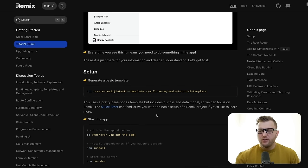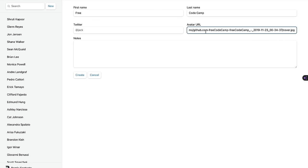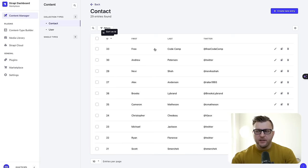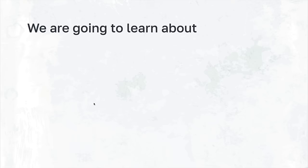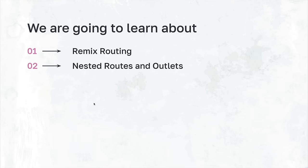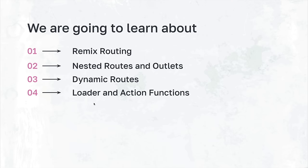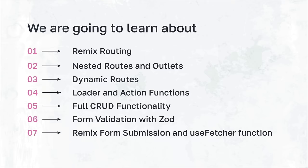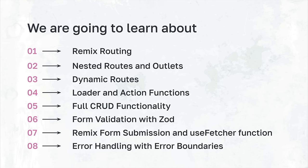Let's take a look at what we're going to build. We'll cover the basics of Remix — everything you need to get started quickly — then add our Strapi backend. We'll cover full CRUD functionality: creating, deleting, updating, and getting data. Topics include Remix routing, nested routes and outlets, dynamic routes, loader and action functions, form validation with Zod, submitting forms using Remix including the useFetcher function, and handling errors via error boundaries.